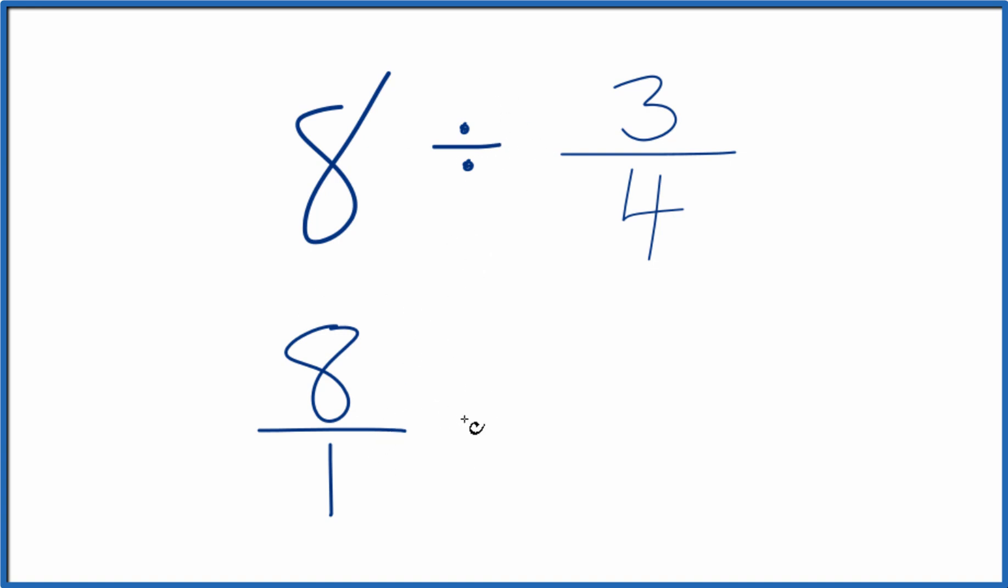And instead of division, let's multiply by the reciprocal of 3 fourths. To take the reciprocal for a fraction, we move the numerator to the bottom and the denominator up to the top. So we have 4 over 3, 4 thirds.